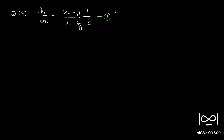To apply the substitution and convert it into a homogeneous form, first we have to check whether the ratio of the coefficients of x in numerator and denominator is not equal to the ratio of the coefficients of y. Here it is 2 to 1 and for y it is minus 1 to 2, so they are not equal, so we can use the substitution.